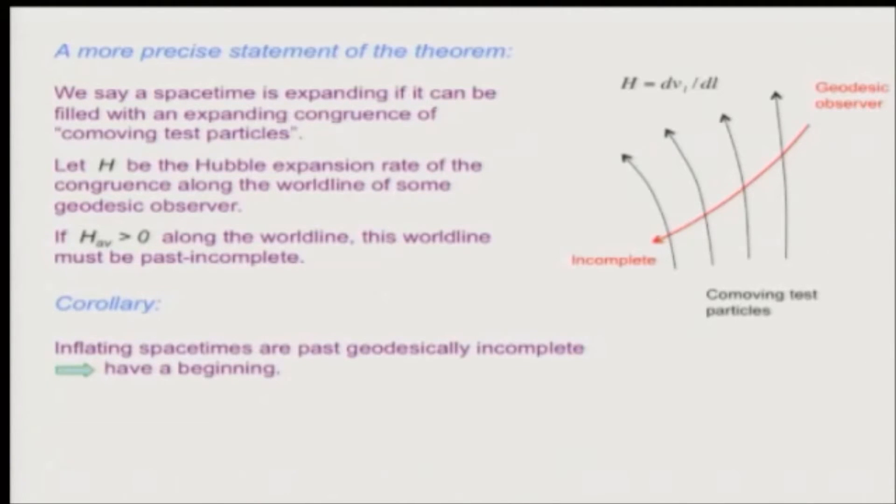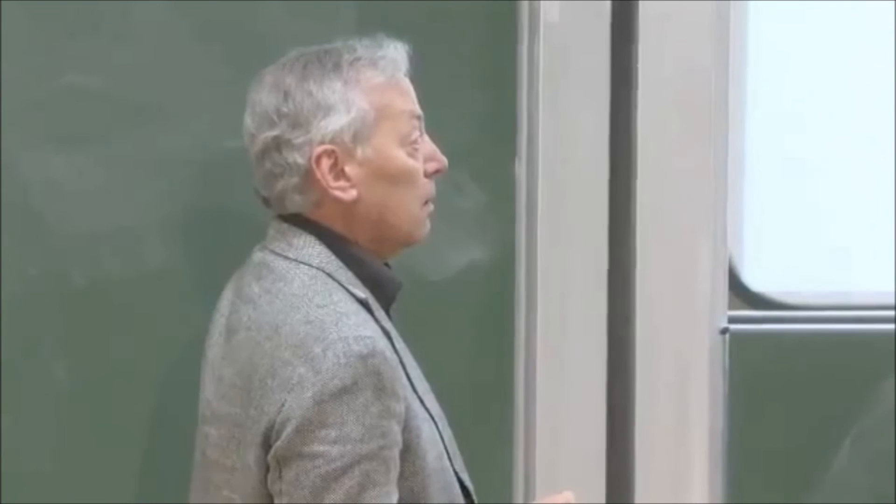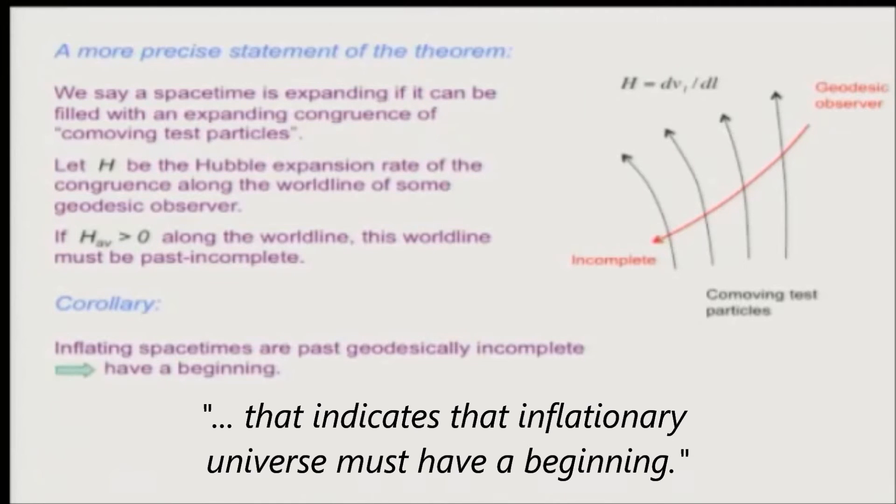Now, it is an interesting thing that even though these geodesics of the congruence could be of infinite length, maybe they go all the way to past infinity, any other geodesic must be finite and incomplete to the past. So this shows that this spacetime region must have a past boundary. And you can actually show that this geodesic reaches the past boundary in a pretty short proper time. So the corollary is that inflating spacetimes must be past geodesically incomplete, because inflation certainly is associated with expansion of the universe. And so if you have this as an inflating region, all the spacetime to the past must also be inflating. And that indicates that inflationary universe must have a beginning.